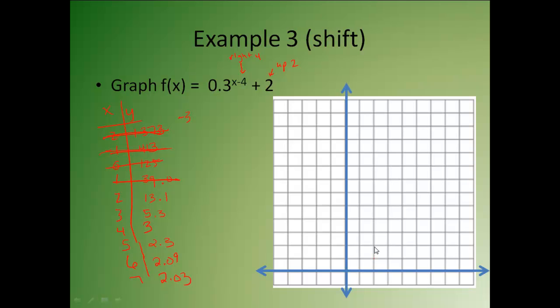So when I plot that one, that'll be kind of one of my higher points. And then I'm going to graph 3 and then the 5.3. And 4 takes me up to 3. 5 takes me up to 2.3. 6 is 2.09. And 7 is 2.03.